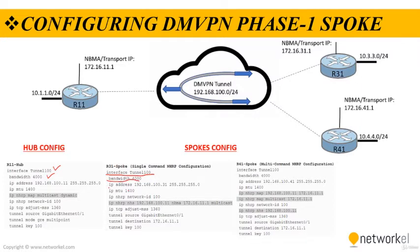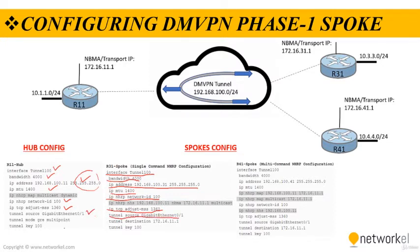The IP address is different on the spoke. MTU is set to the same value, and the MTU and MSS are also the same. The network ID is also the same. The tunnel source follows the same logic. Tunnel destination — we don't have this on the hub. The only difference between the hub and the spoke is that we define a tunnel destination for the DMVPN spoke. This is the NBMA IP address of the hub, which is 11.1, as you can see here.